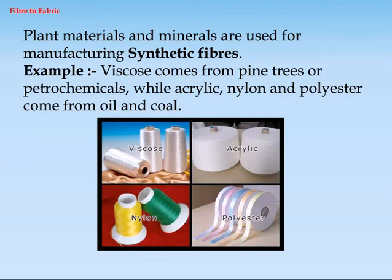Plant materials and minerals are used for manufacturing synthetic fibers. For example, viscose comes from pine trees or petrochemicals, while acrylic, nylon, and polyester come from oil and coal.